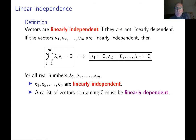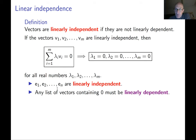First example: if you take the standard vectors e1, e2, en, they are linearly independent. To check this by definition, suppose that they are linearly dependent and try to derive a contradiction. If they are linearly dependent, there exist some numbers lambda 1, lambda 2, lambda n, such that a linear combination with those coefficients is zero, and at least one lambda i is non-zero. But the sum of these vectors with these coefficients is a vector with entries lambda 1, lambda 2, lambda n, so it is zero if and only if all lambda i are zero — a contradiction to being linearly dependent.